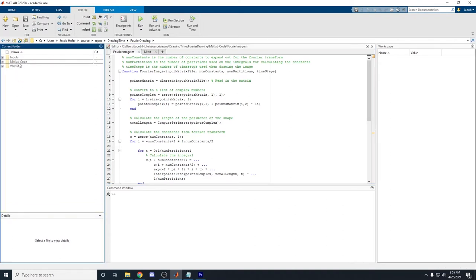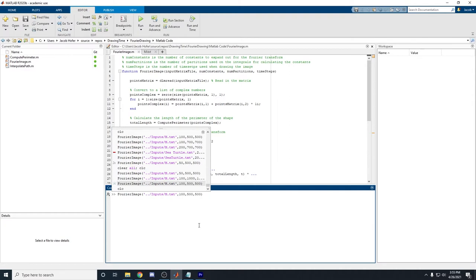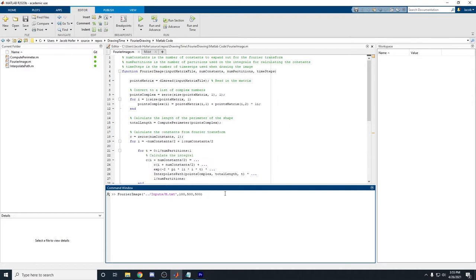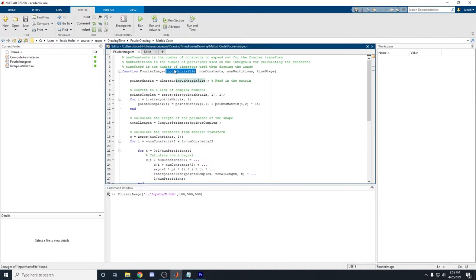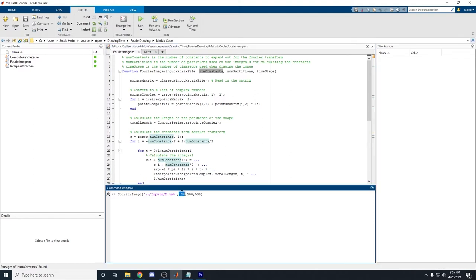And we will run the function FourierImage, which is this custom function that gives us an input matrix file, which in our case is this m.txt, a number of constants to create, which are our c sub n. In our case, we are going to do 100.